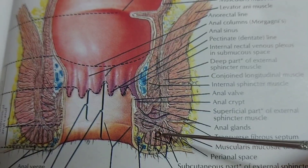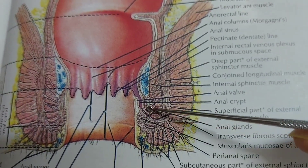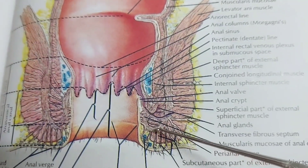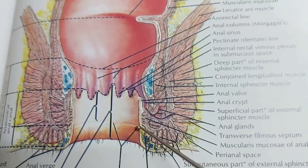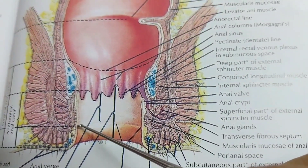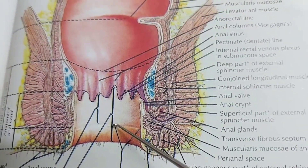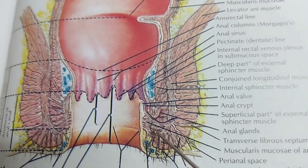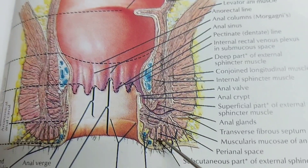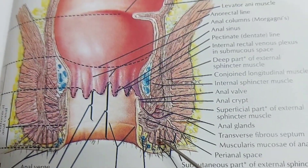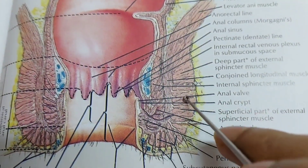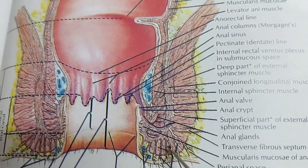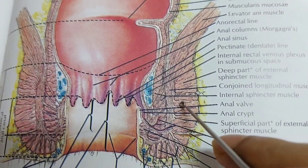In between the subcutaneous part of the external anal sphincter and the internal anal sphincter there is a line known as the inter-sphincteric line. This line continues inside the anal canal and is known as the white line, or white line of Hilton. The external anal sphincter is under voluntary control, controlled through the inferior rectal nerve and the perineal branch of the fourth sacral nerve.